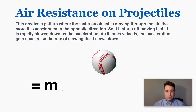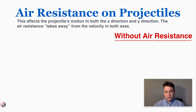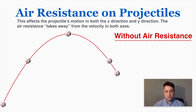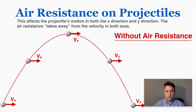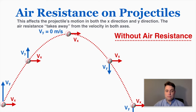Hopefully this visual helps a little bit. We can see the effect of air resistance on the shape of the path of projectiles. Here is an example of an object moving without air resistance. The noticeable thing about an object moving without air resistance is that it forms the shape of a perfect parabola, because its motion in the x-direction is constant and its motion in the y-direction is symmetrical — whatever it's doing on one side, it's doing the opposite on the other.